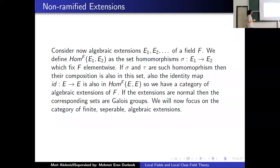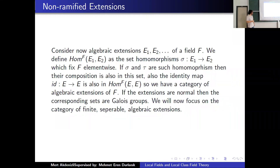If E_1 and E_2 are algebraic extensions of a field F, we define the set of morphisms which fix F element-wise. If sigma and tau are such monomorphisms, their composition also fixes F. So if one is in Hom(E_1, E_2) and the other in Hom(E_2, E_3), the composition is in Hom(E_1, E_3). The identity is also in this set, so we have a category of algebraic extensions of F. If the extensions are all normal, these sets are actually Galois groups by definition. In this presentation we focus on extensions which are finite, separable, and algebraic.